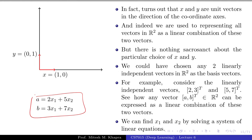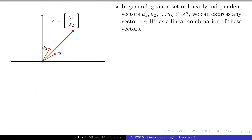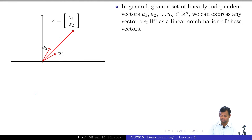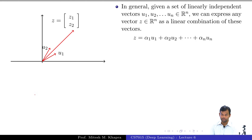The algorithm used for solving this is Gaussian elimination. In two variables we do not call it an algorithm — that is what we did in 8th standard — but in engineering we call it Gaussian elimination. In general, given a set of linearly independent vectors, we can express any vector z belonging to Rⁿ as a linear combination: z = α₁u₁ + α₂u₂ + ... given that u₁ to uₙ are linearly independent.